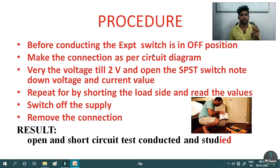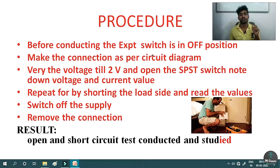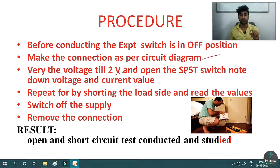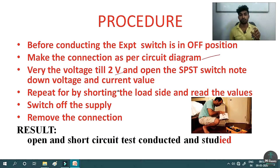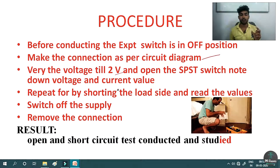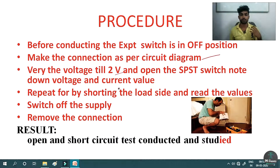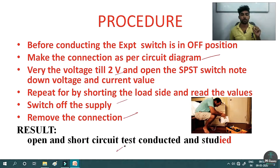Procedure: before conducting the experiment, everything must be in the off position — the supply must be off. Make connections as per the circuit diagram. Vary the voltage to 2 volts and open the SPDT switch. Note the voltage and current values for the open circuit test. Repeat the same for the short circuit test by connecting a thin wire to short the lamp terminals and note the readings — voltage will reduce to near 0 and current will be higher. Then switch off the power supply and remove connections.